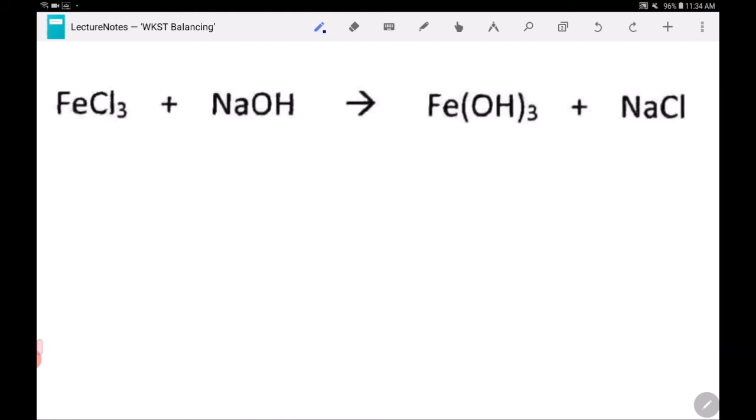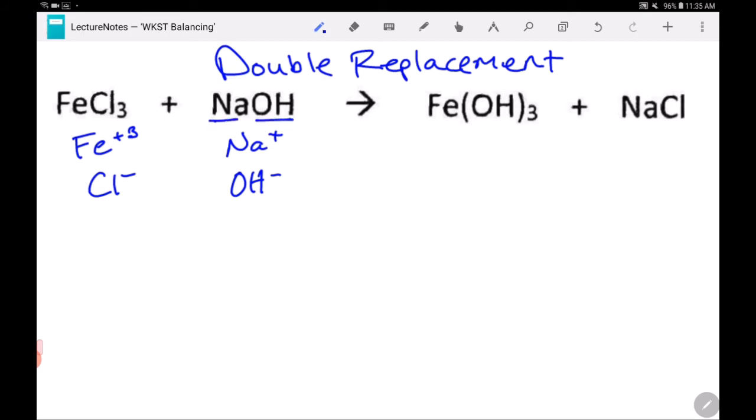This one looks pretty complicated, but it's actually not. A double replacement reaction is one where you have four things. The sodium, the hydroxide, the ferric, the chloride, four things.